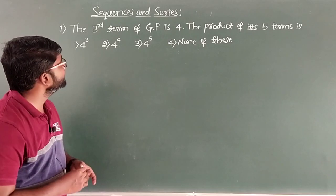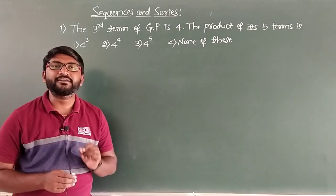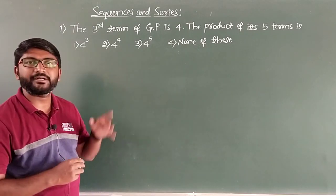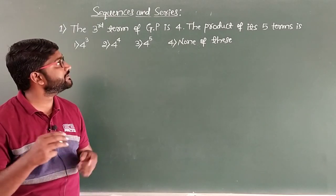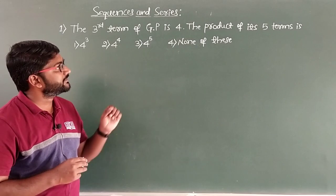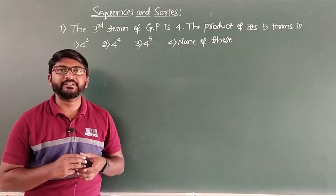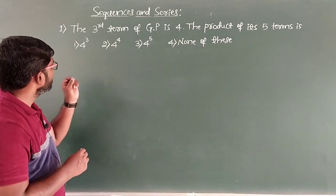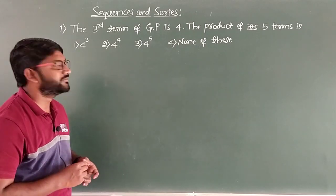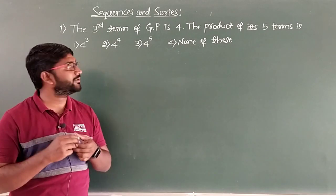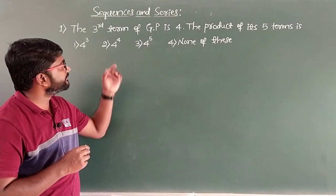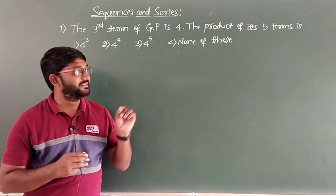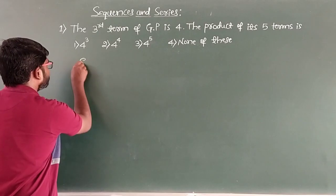The first question: the third term of a GP (geometric progression) is 4. The product of its five terms is — and the four options are 4 cubed, 4 to the power 4, 4 to the power 5, and none of these. Let us go ahead with the solution.